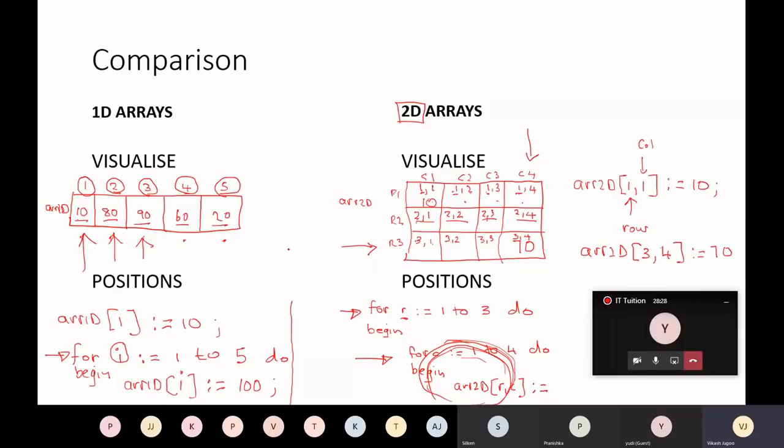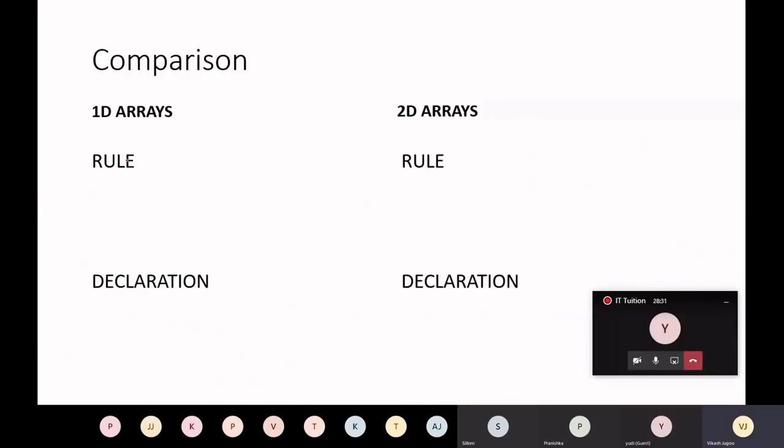And as I indicated, the rule here is, in a 1D array, to go to each cell, use a single for loop.